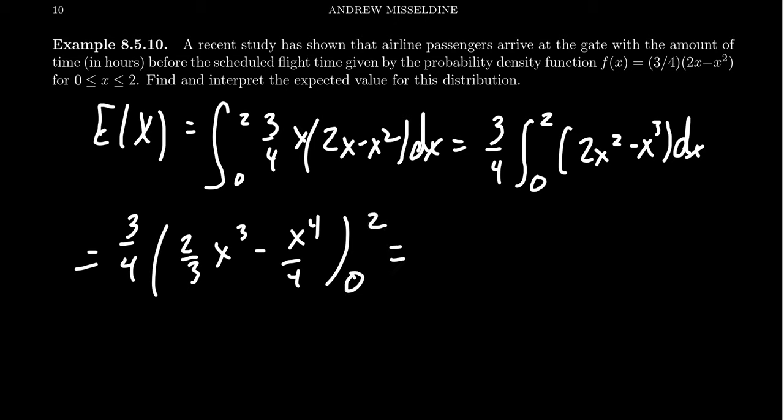Plugging in 0 makes everything disappear. Plugging in 2 is more interesting. 3 fourths right there. When you plug in 2, you get 2 times 2 cubed, that's 16 over 3. You subtract from that 2 to the 4th, which is also 16 over 4.